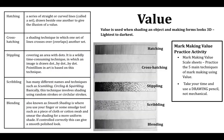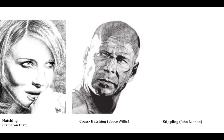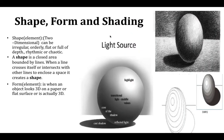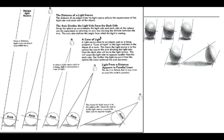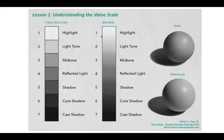Moving into the next part: value. We've got a lot to cover here — we'll be looking at value scales, how mark making works, and then moving on to shaded spheres and shaded shapes.